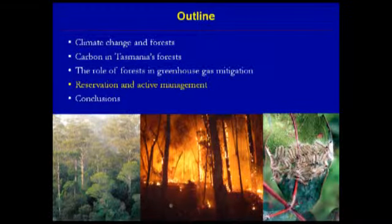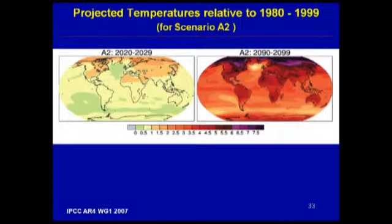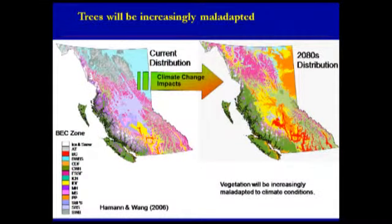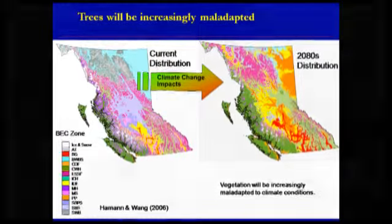Thinking about reservation versus active management, we must be mindful that the IPCC projects relatively large temperature changes over coming decades. If we try to store carbon in forests subject to this temperature change, we must recognize it will invoke ecosystem changes — publications show climate change redistributing ecosystems significantly, as demonstrated in British Columbia. These forests will become increasingly maladapted to their climate, and the probability of storing additional carbon may be there in some instances, but in many the forests are likely to become younger as they try to transition, with fire also being a major player.